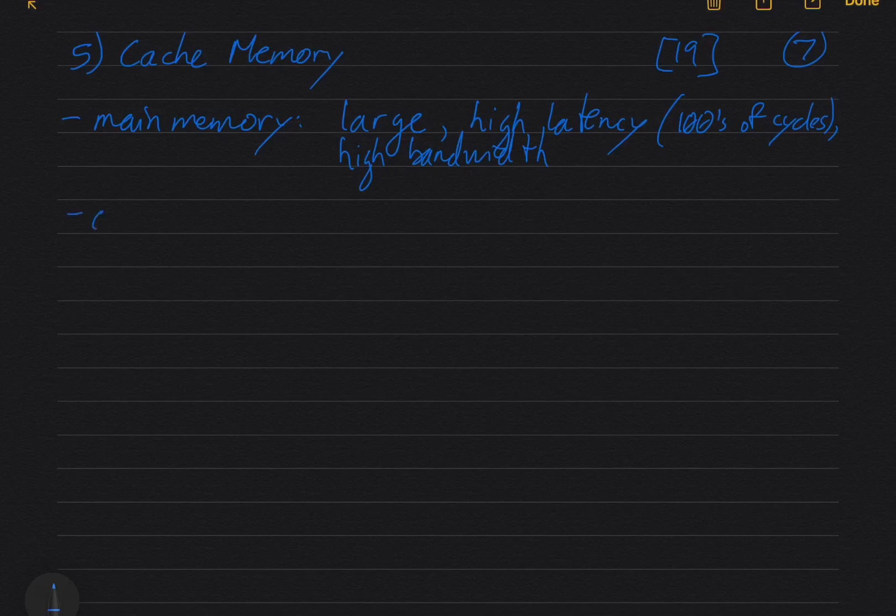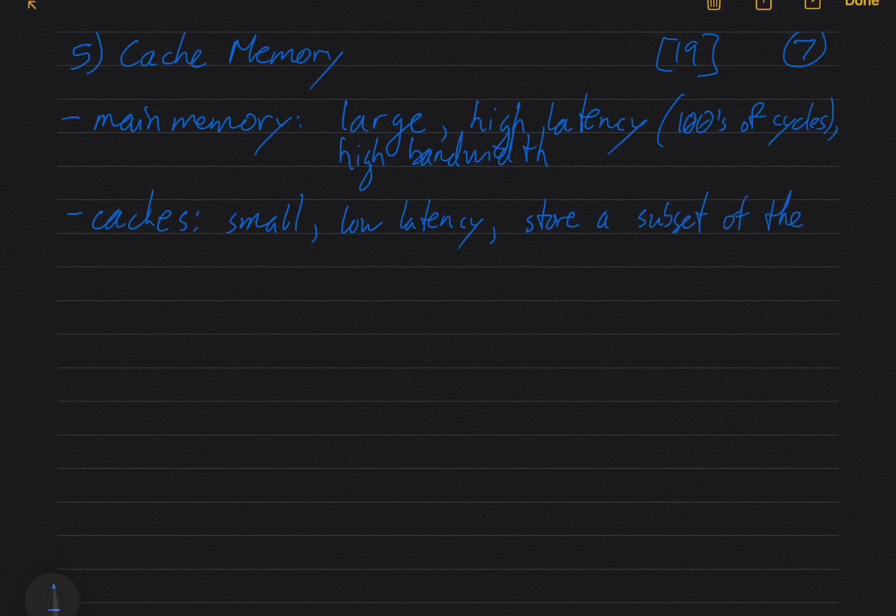All right, so now we've got caches. Caches are small, but they have low latency, and what they do is they store a subset of the main memory. So there's this thing called the cache controller, which is built into the cache. So the cache has storage, and then it's got this controller. The processor talks to the cache controller and says, give me the data at address x. And the cache controller says, do I have that? If I do, it gives it back right away. If it doesn't, it goes to the main memory.